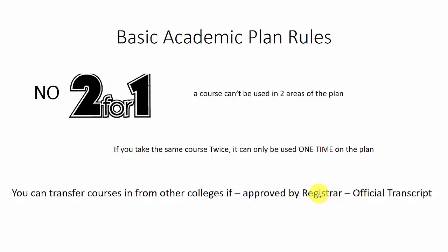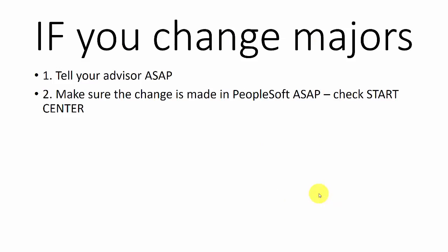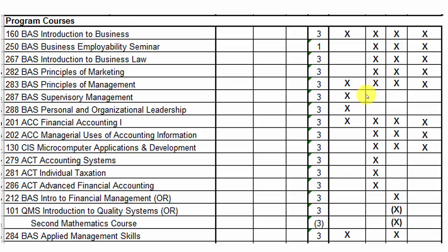Very important: if you change majors, tell your advisor immediately — that's me — so we can make the proper changes on our end. Also make sure the change is made in PeopleSoft as soon as possible. Check with the start center to see what procedures are involved, because the whole point is you don't want to take any classes you don't need to be taking and waste your time.